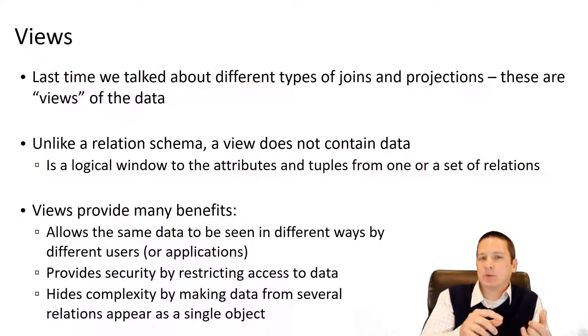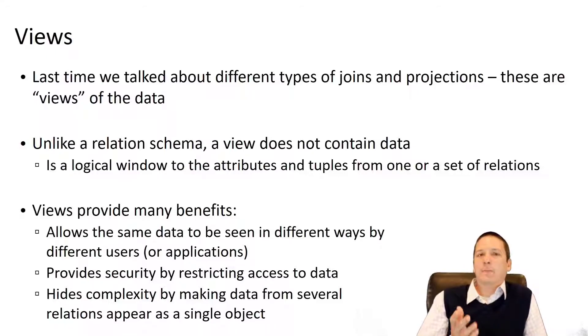This provides both security and simplicity by showing the user or application exactly the data they need to see, nothing more, nothing less. Imagine if we had in our users table 200 different attributes describing users. But then a particular application needs to verify a user's date of birth. Really all that application or user would need is the unique identifier of that user, like their username, and their date of birth.